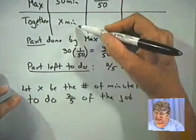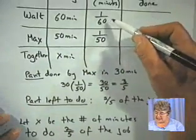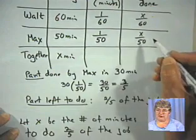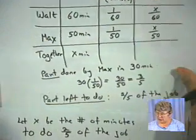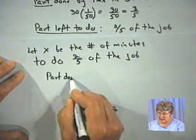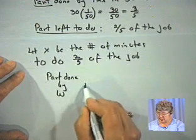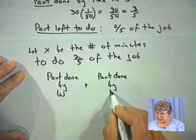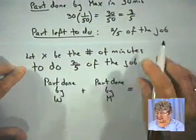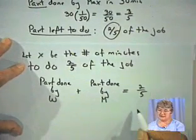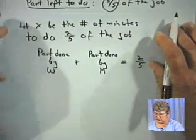Now, if they work together x minutes, Walt's rate is 1/60th, so he will do x/60ths of the job. So, the part done by Walt plus the part done by Max equals the job to do, but in this case, we have only 2/5ths of the job to do. So that's going to be equal to 2/5ths. And that part's very important. So, that's one of the differences with this particular problem.